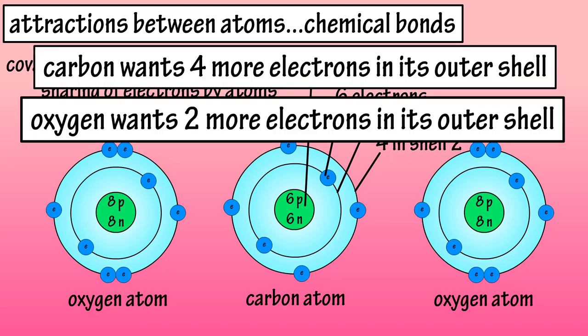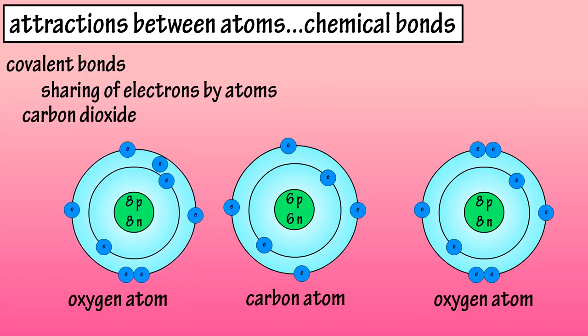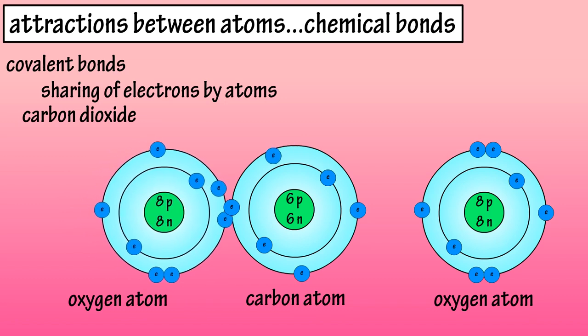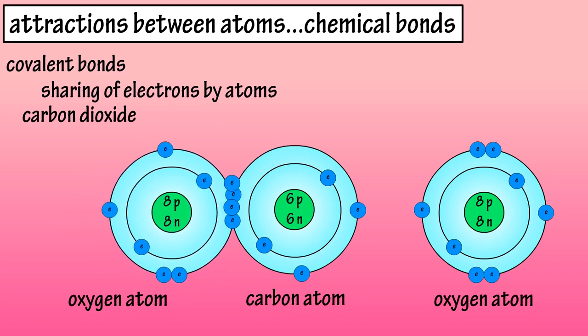These fellas can make each other happy by sharing what they have. Oxygen atom number one can share two of its electrons with the carbon atom. And in return, the carbon atom can share two of its own electrons with oxygen atom number one, making oxygen atom number one happy.